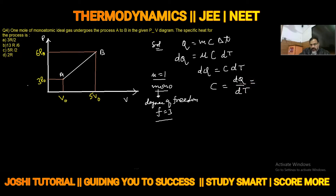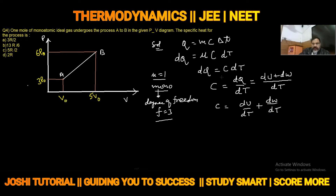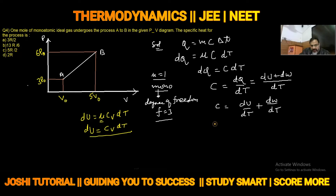Now let's solve this further. We know DQ = DU + DW, from the first law of thermodynamics, divided by DT. So specific heat becomes DU/DT + DW/DT. Now we need to solve DU. For any process, DU = μCvDT. Since number of moles is 1, DU = CvDT. Specific heat C = Cv + DW/DT.